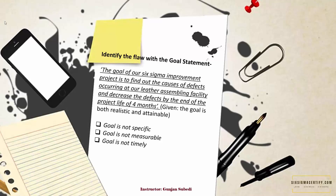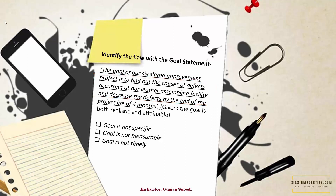By SMART goal, we mean making a goal that is Specific, Measurable, Attainable, Realistic, and Timely. We are given that the goal is both realistic and attainable according to the capacity of the organization. But is it specific? Yes — it talks about finding out the causes of the defect at the leather assembling factory, so it is specific and it also wants to decrease the defect. But decreasing the defect by how much? It's not measurable — there lies the problem.